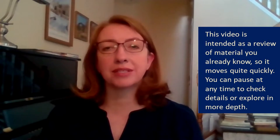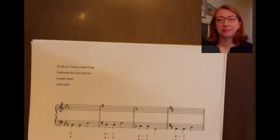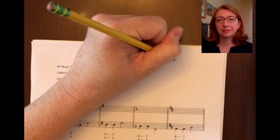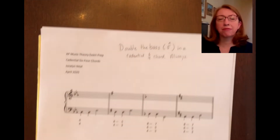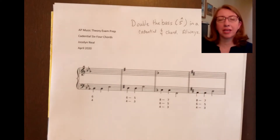Part writing for a cadential 6-4 chord is very formulaic. In order to get it correct, we have to start with our most important doubling rule. When you are working with a cadential 6-4 chord, double the bass, which is scale degree 5, always. Remember that figured bass tells us the intervals above the bass. It tells us the intervals above the bass, and if we use that as our starting principle, it's going to allow us to write a cadential 6-4 chord with the correct doubling and the correct voice leading.